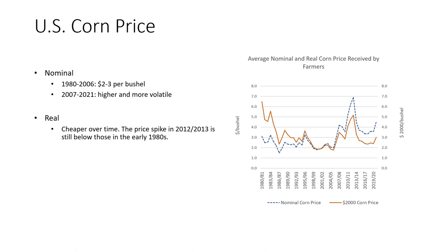This graph shows how the price of corn changed over time, both in nominal and real dollars. In nominal terms, the price of corn fluctuated in the two-to-three dollar per bushel range between 1980 and 2006, then became higher and more volatile from 2007 to 2021. In real terms, corn has become cheaper over time — the price spike in 2012-13 is still below those in the early 1980s.